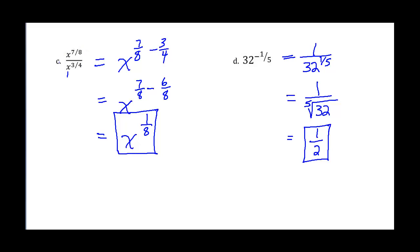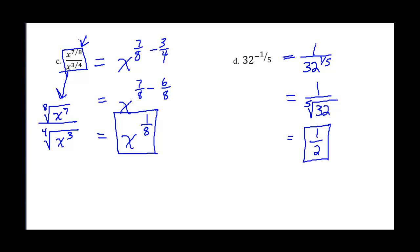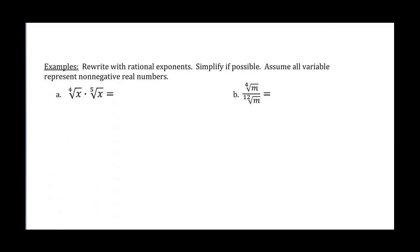Those rules of exponents allow us to simplify more and more things. For instance, I could have given you a problem like the eighth root of x to the seventh over the fourth root of x to the third. If you want to simplify an expression like that into one single radical, you have to change it to fractional exponents and use the properties of exponents to simplify it down into one single radical.